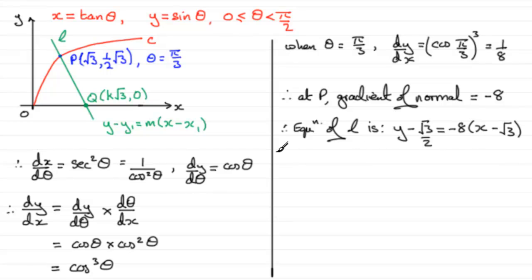Now we know that at Q, the y value must be 0. So at Q, we can say y equals 0. So if we substitute this into our equation here, we're going to have minus root 3 over 2 then, equals, and if we expand the bracket at the same time, we're going to get minus 8x, and then plus 8 root 3.